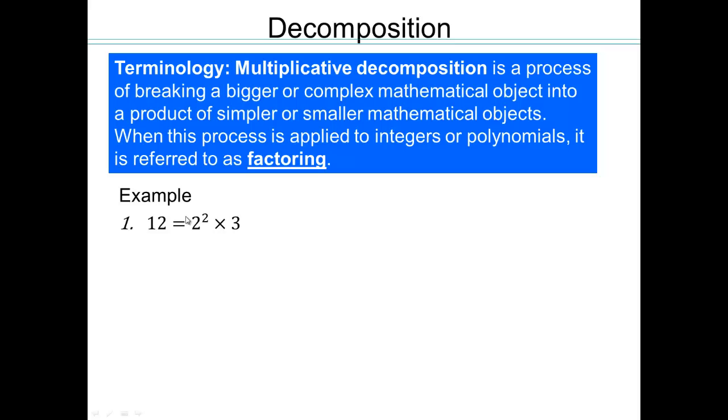12 can be written as factors 2 times 2 times 3. We can write 14,568 as a product of these numbers. You can write the polynomial 6x² + x - 1 as a product of these two polynomials. You can check that if you multiply term by term using distributive property, multiplication over addition or subtraction, you will verify that that product is, in fact, 6x² + x - 1. This is called multiplicative decomposition or factoring of numbers or polynomials.